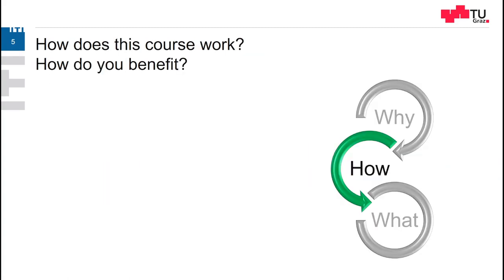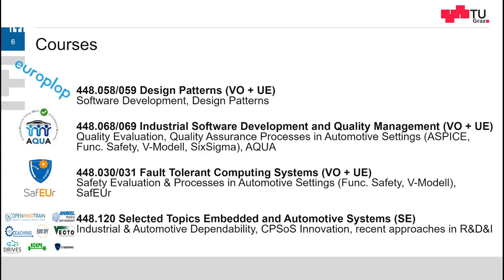Coming to the how — how does this course work and how is it embedded? The course is one of four groups of courses that we give in our research group. The first is related to design patterns, software engineering and software development design patterns, consisting of a lecture and a practical part. The second course is related to industrial software development and quality management, consisting of a lecture and a practical part, focusing on quality assurance processes and quality evaluation, again in the automotive domain.